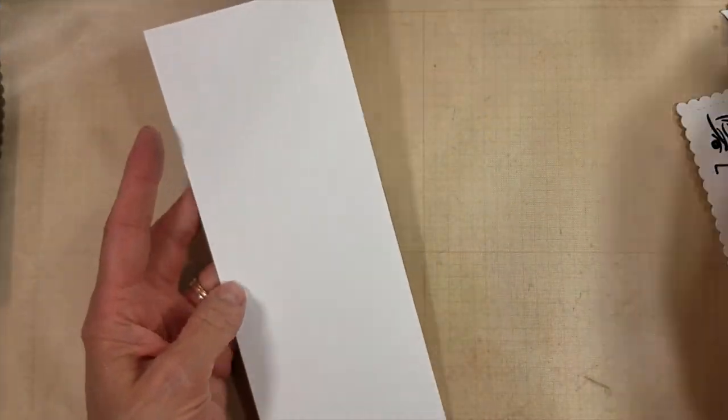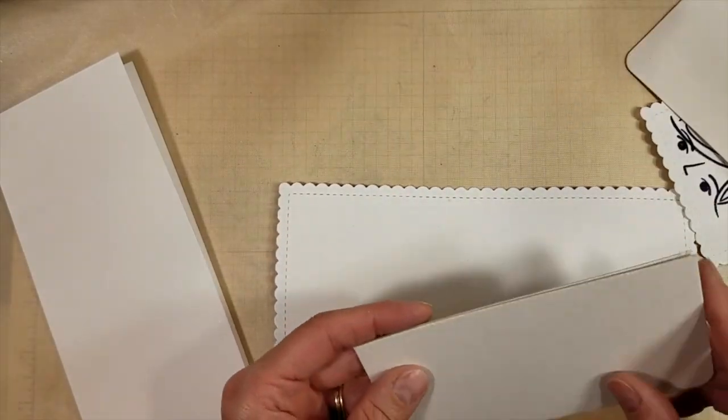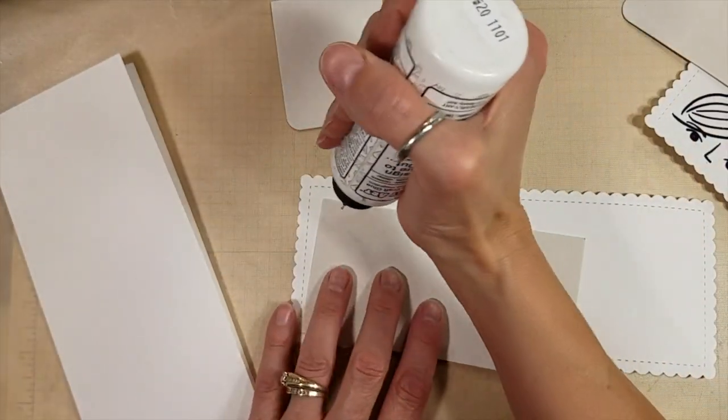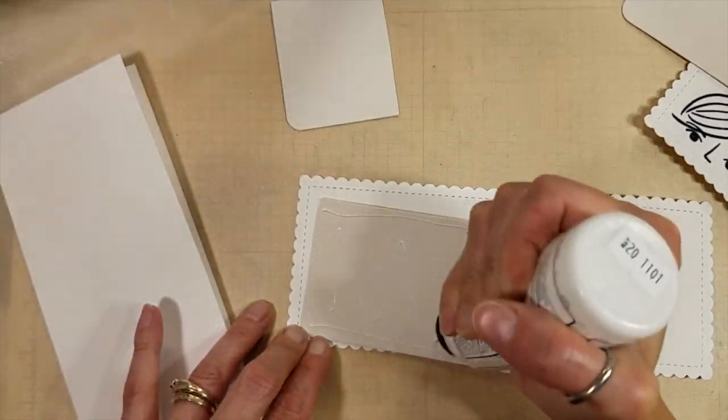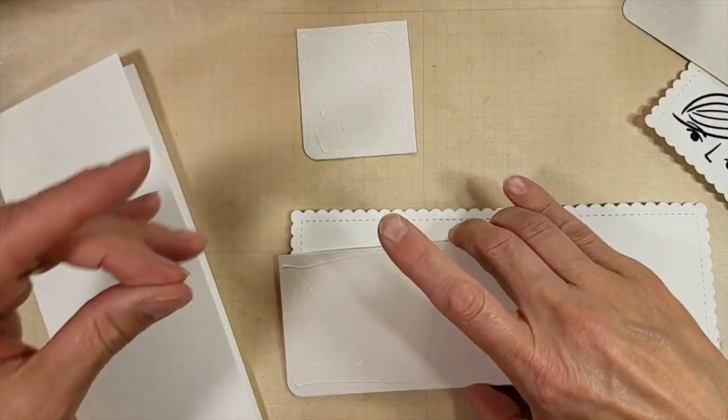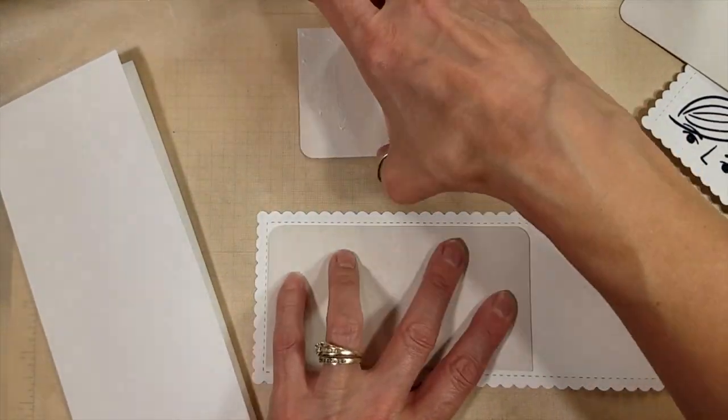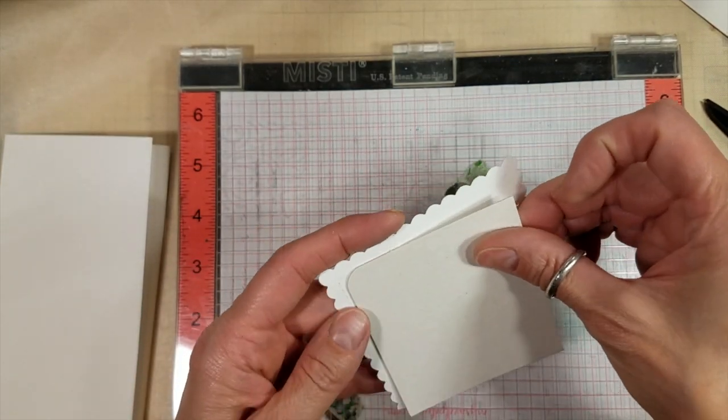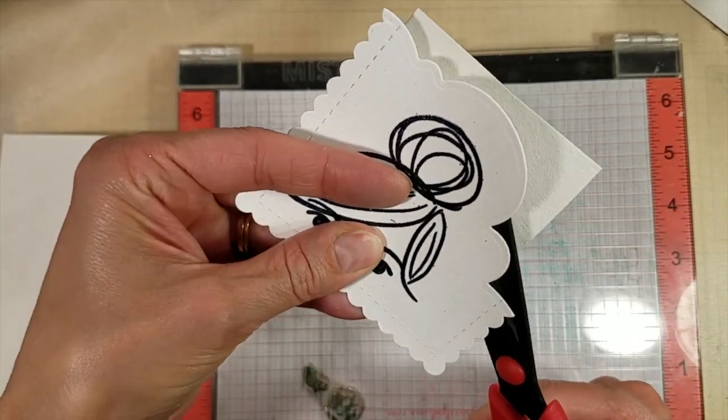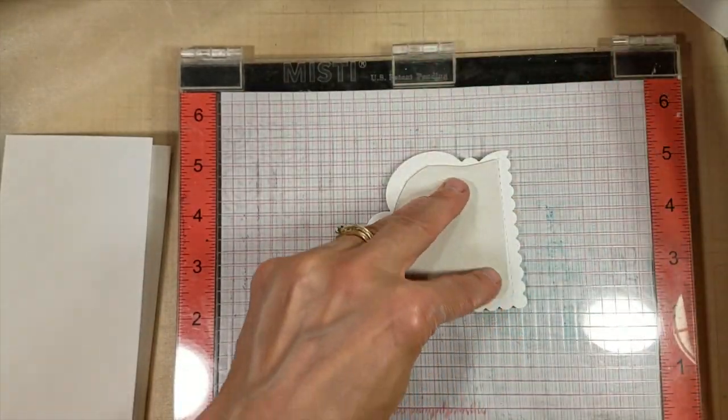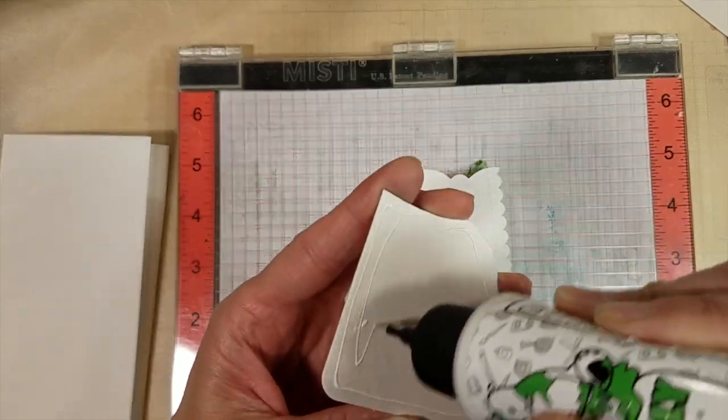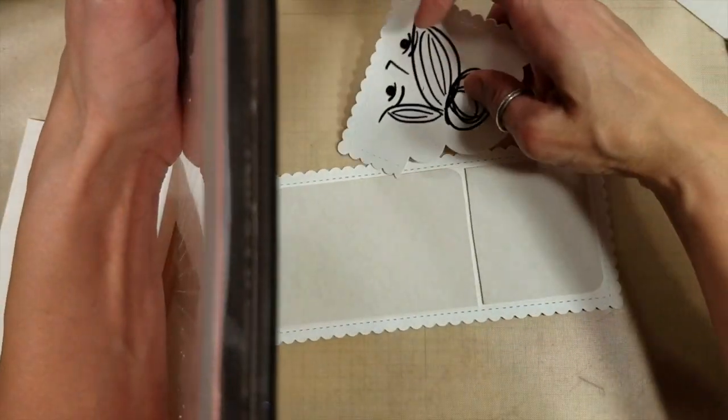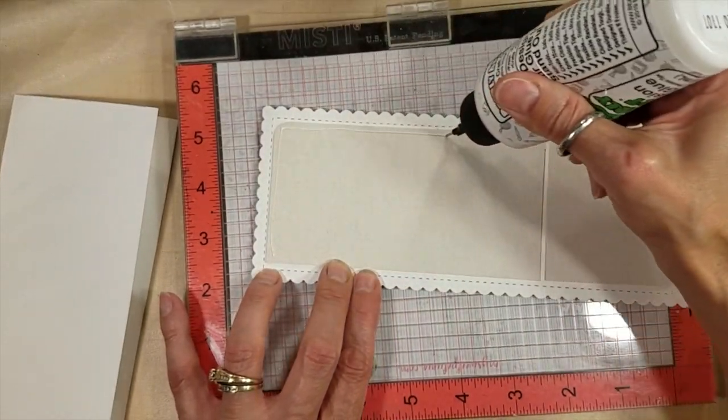So this is my 3 1⁄2 by 8 1⁄2 inch card base from Neela Solar White, 110 pound cardstock. I'm using my coaster blanks to add a little dimension and stability to this card or to this panel. And the Barely Art Precision Glue will put that underneath my MISTI while I work on the other pieces. And I'm just going to trim this piece. I cut that down to 2 3⁄4 inch because I believe it's 3 inches from side to side on the stitching behind the scalloped panel. And I'm just,